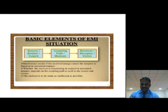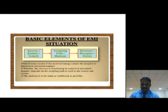The other name for the source is emitter, which is nothing but the culprit — the source of interferences. The coupling path is nothing but how the interference couples towards the receptor. The last component is the receiver or receptor, which is called the victim. These are the basic fundamentals.